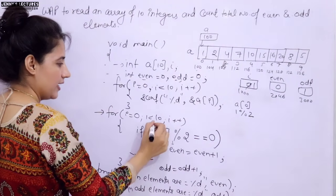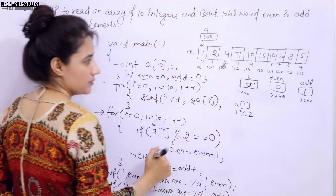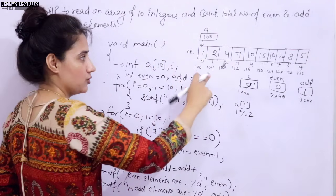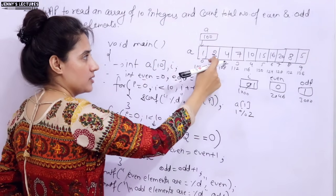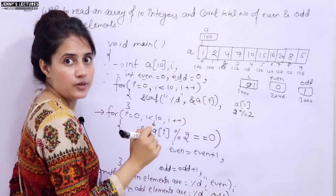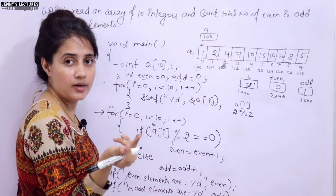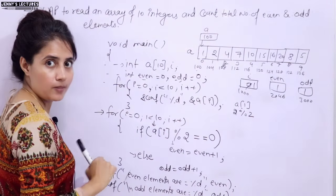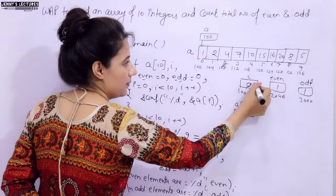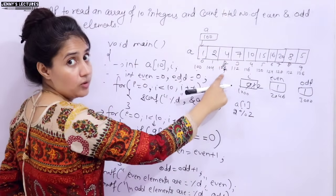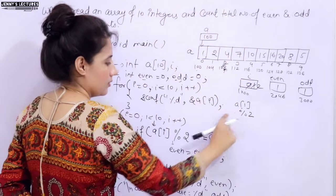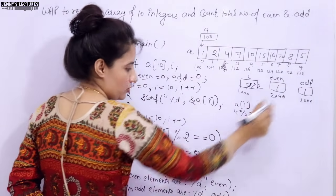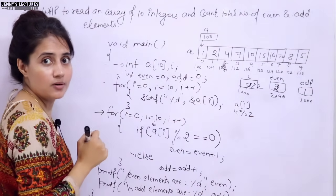i becomes 1, condition is true. A[1] is 2. We check 2 % 2 = 0, condition is true — even = 0 + 1 = 1, even becomes 1. Then i++ makes i equal to 2. A[2] is 4. 4 % 2 = 0, condition true again — even = 1 + 1 = 2. Now even becomes 2. We assign 2 to even.